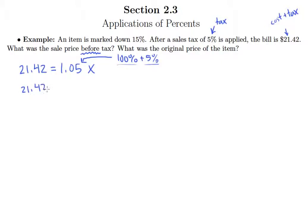We can divide both sides by 1.05. So we're dividing these. So we'll be dividing 21.42 by 1.05. And of course, we know we've got to move that decimal point to the right in both numbers.